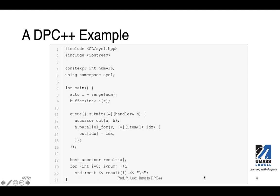Let's look at a simple DPC++ example. We have 21 lines of code. This code has both the main function that will be executed on the host CPU, and also the kernel function that will be executed on the accelerator. It begins with including header files. Iostream is the typical C++ standard IO library, and cl/sycl.hpp is the header file for SYCL declarations.